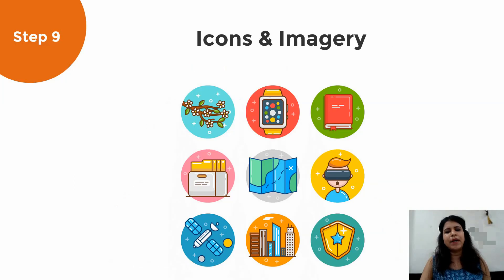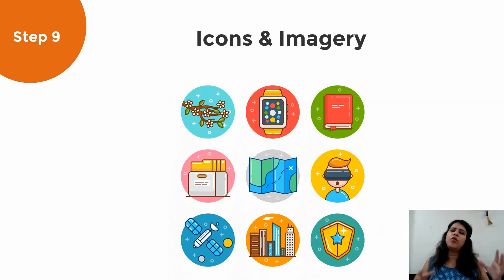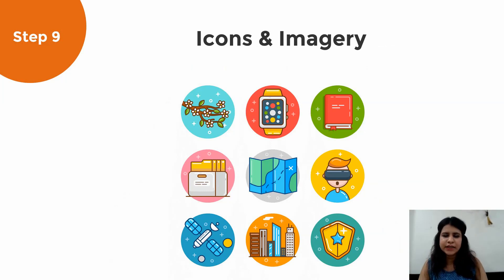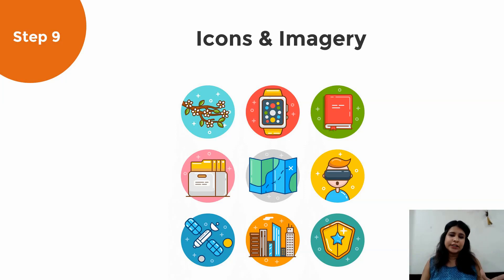Moving on to step nine: after you're done with this, you can start grabbing icons and imagery online. You already have the structure of the PPT and know what the content is like, so you'd know what sort of icons and imagery you need for each and every slide — that's where wireframing and structuring helps. Start grabbing icons and imagery online so that you have a folder ready when you're making the presentation and don't have to look for imagery every time. That's your step nine.